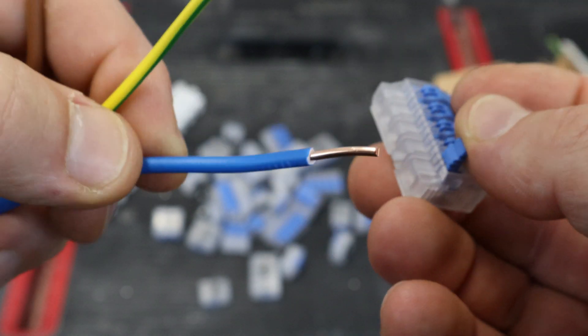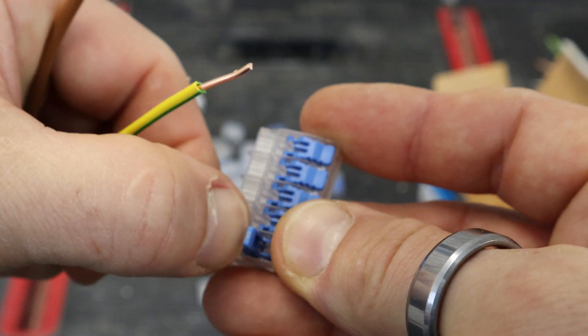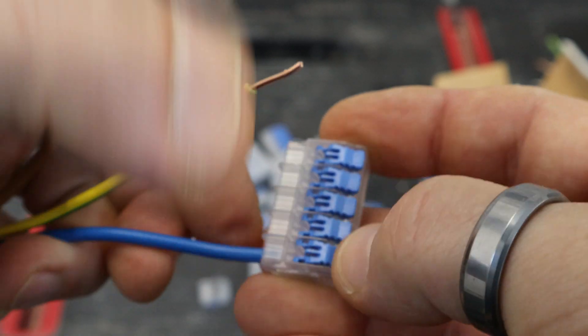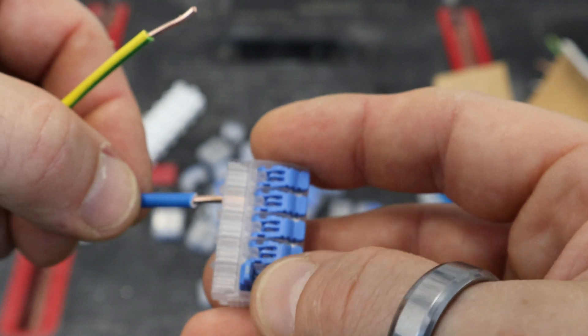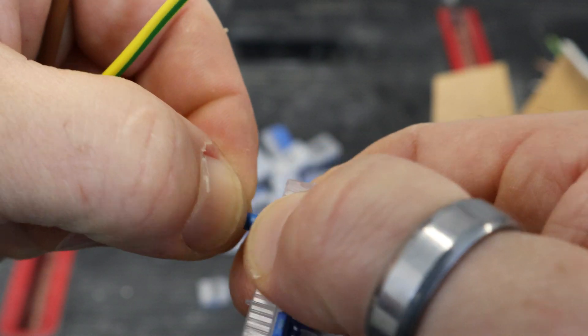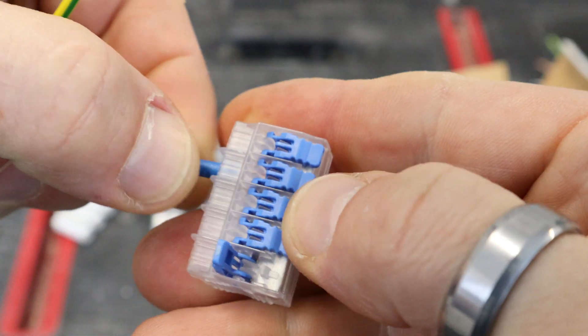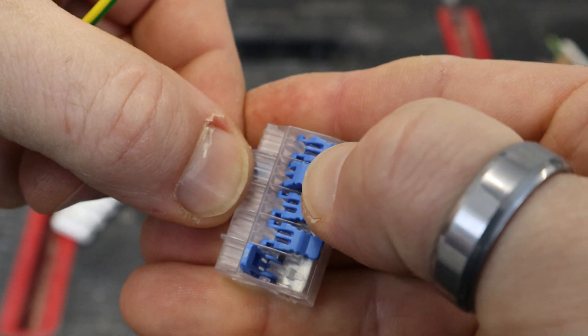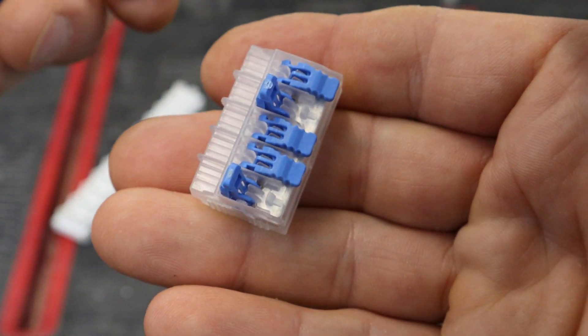A bit of 2.5 solid core. Job done. Another great feature with this is that you can just push the solid core straight in without actually having to open the lever and it's got a very good hold on it. Again you just lift the lever and it comes out. So fantastically reusable as well which is great.